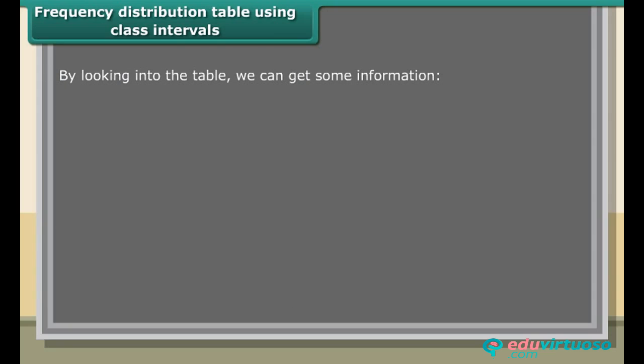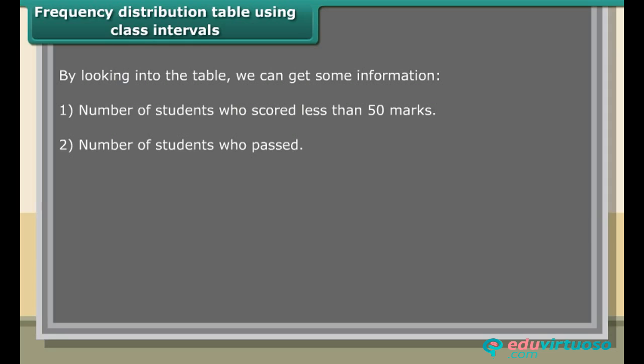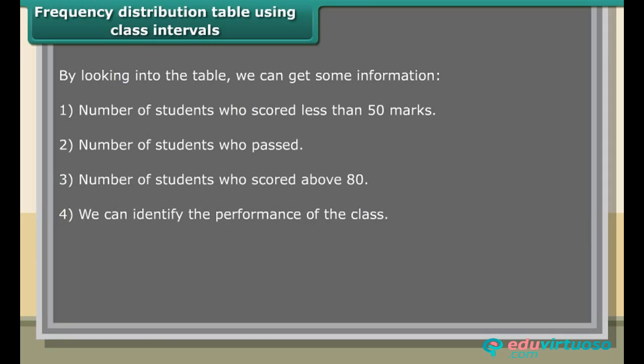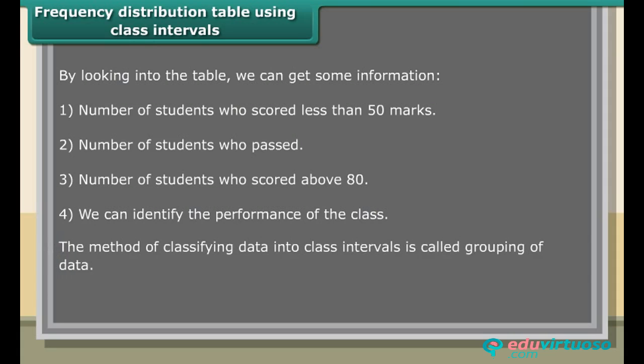By looking at the table, we can get information such as: the number of students who scored less than 50 marks, the number of students who passed, the number of students who scored above 80, and we can identify the overall performance of the class. The method of classifying data into class intervals is called grouping of data.